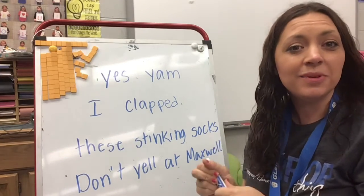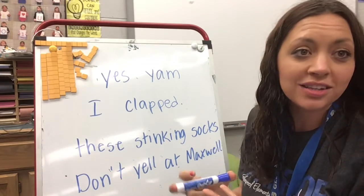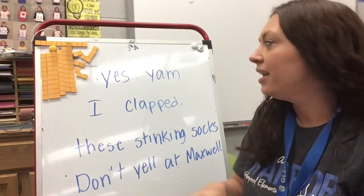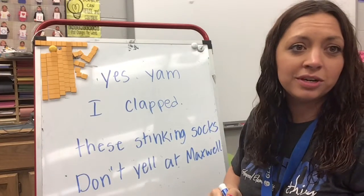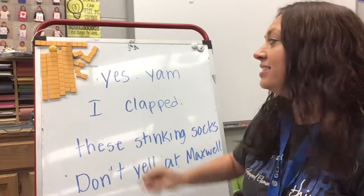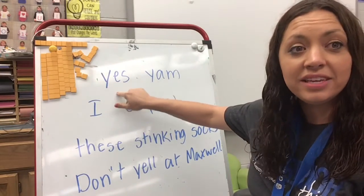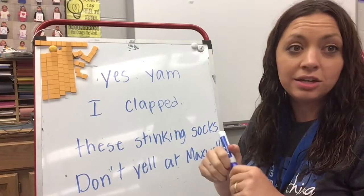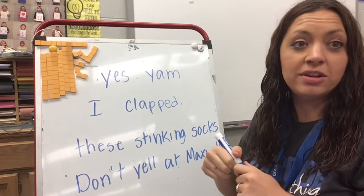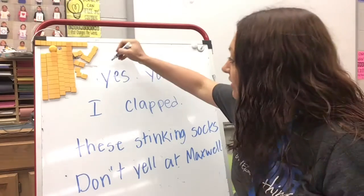Hi guys! So we're ready to code some words today, and we worked on the letter Y today. So right from looking at my first word, I can look at that and say I know that is a CVC word. So I automatically know that vowel is going to be short.